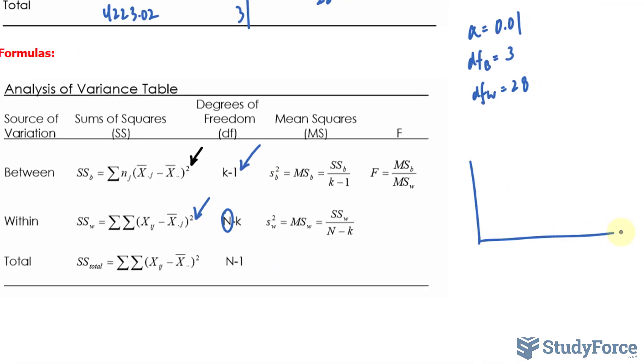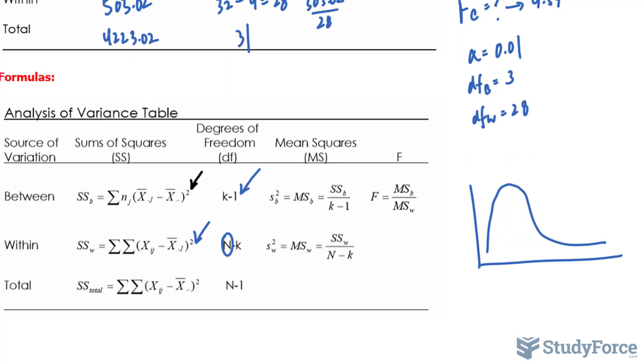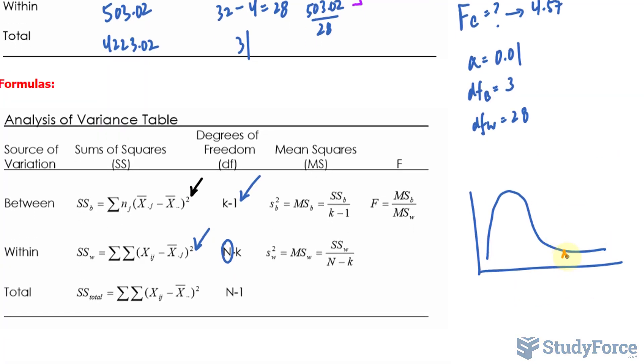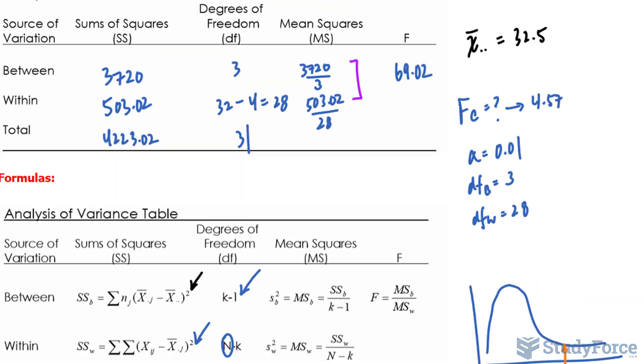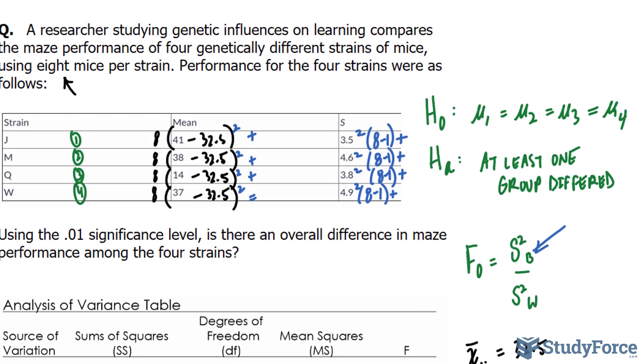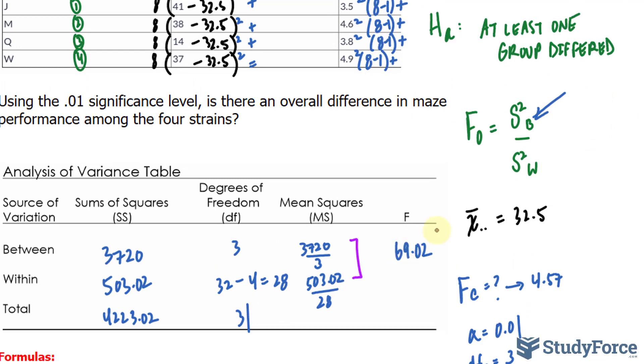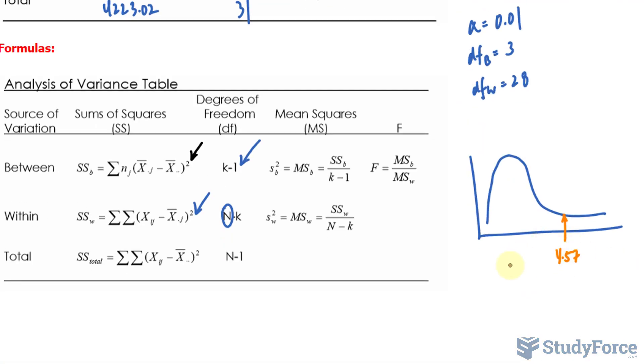The f distribution has the following graph, and f critical is 4.57. Let's say over here. Because the value 69.02 is well beyond 4.57, let's say somewhere down here, at this end of the distribution, it falls in what we call the rejection region.